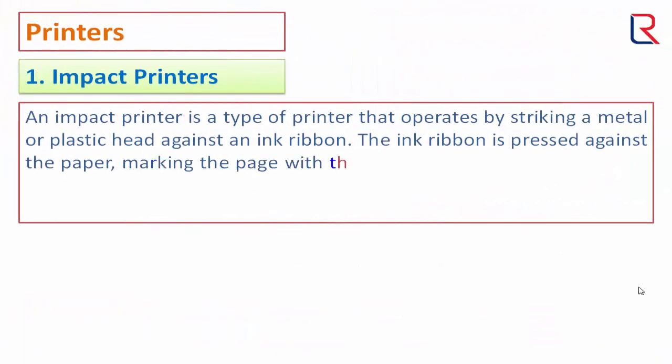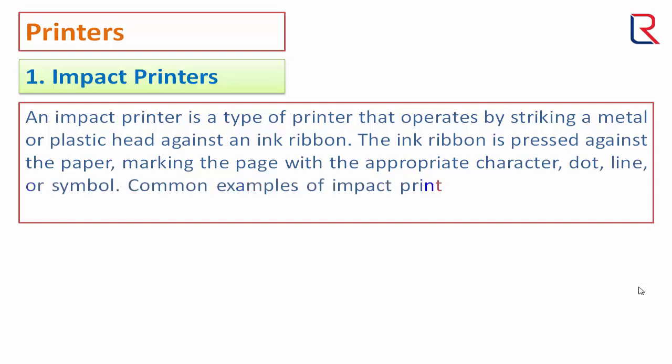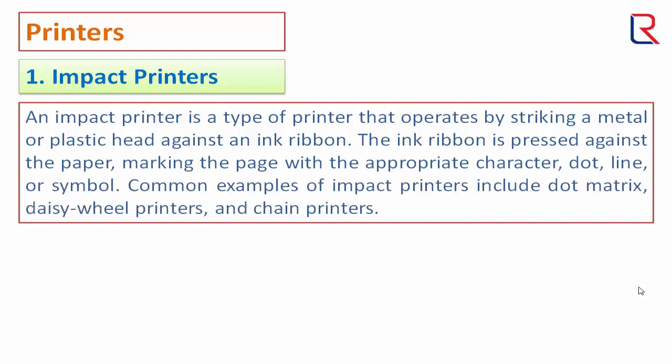An impact printer is a type of printer that operates by striking a metal or plastic head against an ink ribbon. The ink ribbon is pressed against the paper, marking the page with the appropriate character, dot, line, or symbol. Common examples are the daisy wheel printer, dot matrix printer, and chain printer.